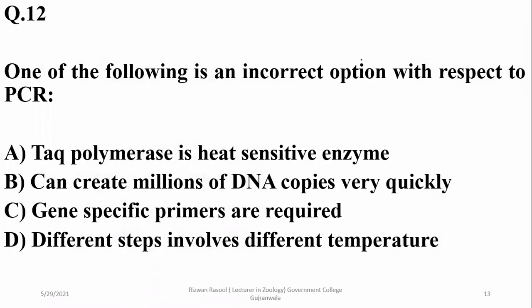Which of the following is an incorrect option with respect to PCR? Alpha: PCR makes use of Taq polymerase, which is heat-stable or thermostable, rather than a heat-sensitive enzyme. So alpha is a wrong statement.